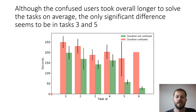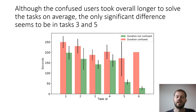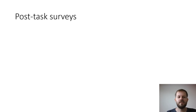We also compared average times for solving tasks when confusion was reported versus when it was not. On average, it took longer to finish a task when confusion occurred. However, the only statistically significant differences were in tasks three and five. This suggests that time alone is not sufficient to detect confusion, and we need more sophisticated features derived from mouse or eye tracker data.